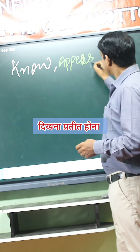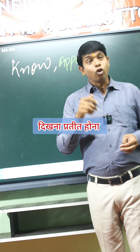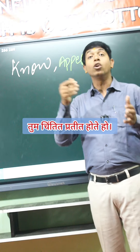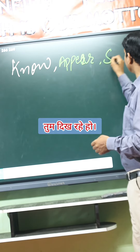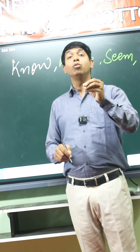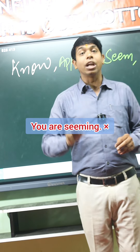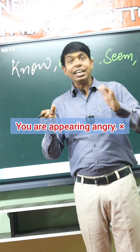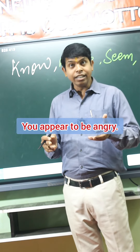Appear means we don't use it in continuous form. Like, 'you are seeing' — don't say it. This word is 'seem.' Seem and appear — we don't use in continuous form. Like, 'you are seeming' — don't say it. Say 'you seem.' 'You are appearing angry' — don't say it. Say 'you appear angry' or 'you appear to be angry.'